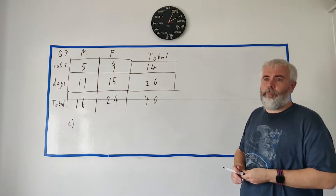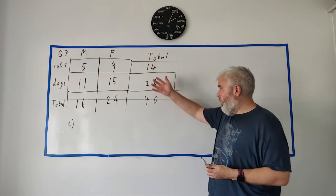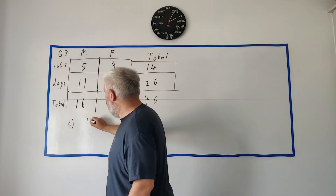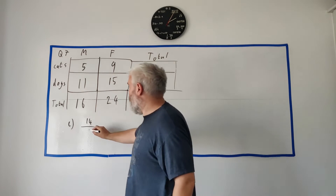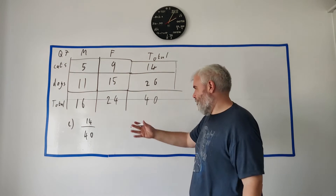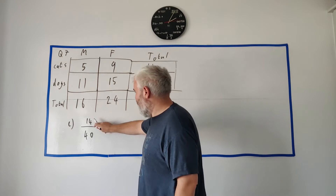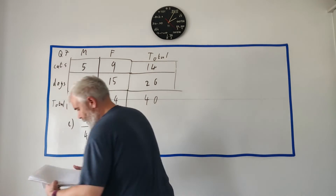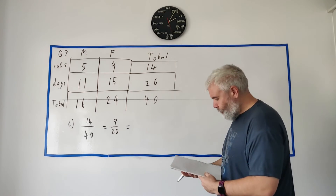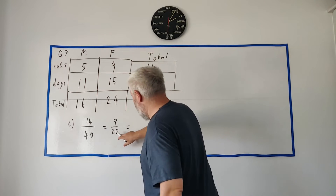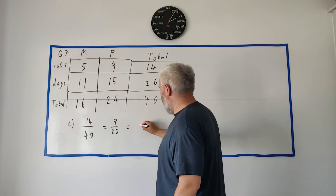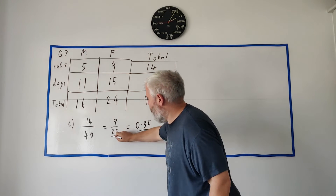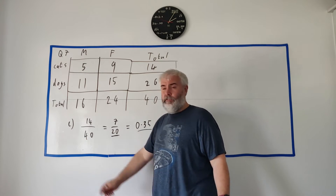Part C: three different animals are picked at random from the shelter on this Monday. Find the probability that the first animal picked was a cat. There are 14 cats out of 40 total animals — that's 14 over 40. You might lose a mark for that answer since you can simplify it: divide both by two to get 7 over 20, which is full marks. You could also put it in a calculator to get the decimal: 0.35. Either 7/20 or 0.35 is the correct answer.